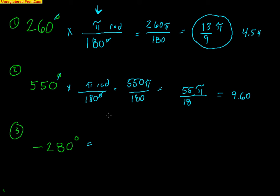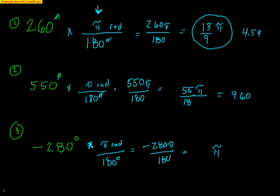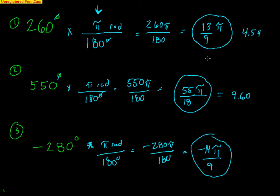We can also have negative angles — it's the same thing but going into a clockwise rotation. Multiply negative 280 degrees by π radians over 180 degrees. Holding off on the pi: negative 280 divided by 180 reduces to negative 14 ninths. So I get negative 14π over 9. The circled answers are my exact answers — you can find approximations, but I prefer exact answers involving π.